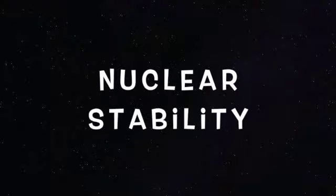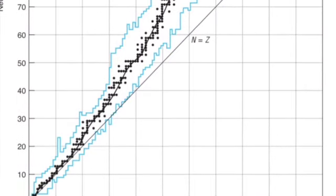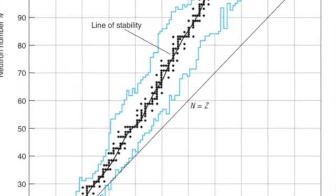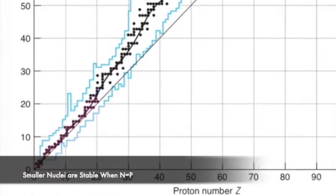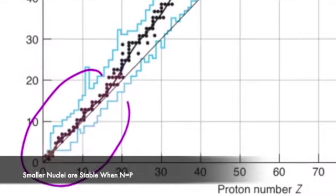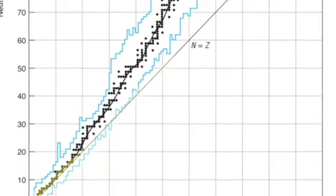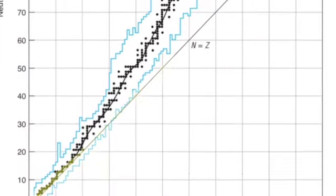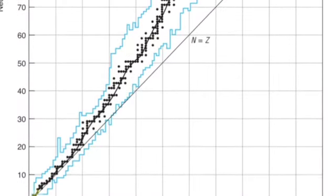Among 3,000 known nuclides, only about 257 of them are stable at ground state. Consider a plot of neutrons against protons as shown. Small atoms are mostly stable when their number of protons equal to the number of neutrons. The straight line is where the neutrons equal to the number of protons. The curvy black line is known as the line of stability.